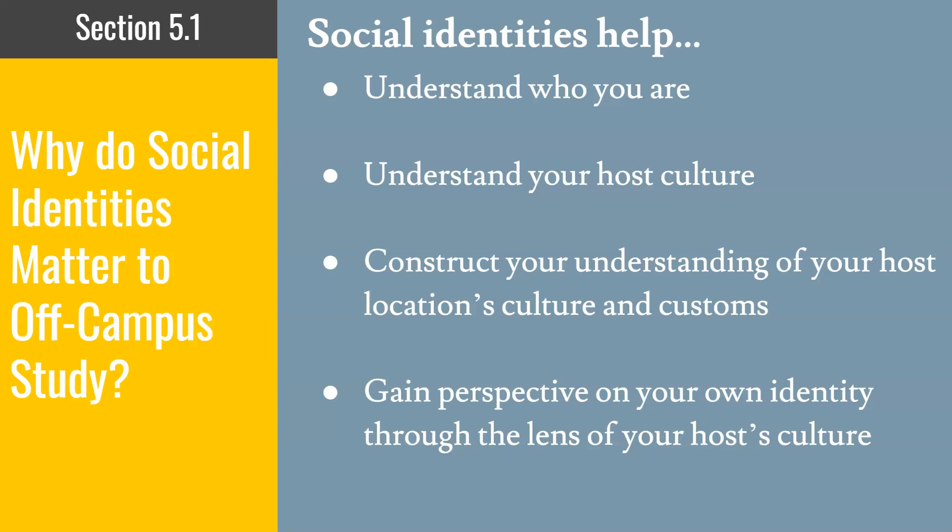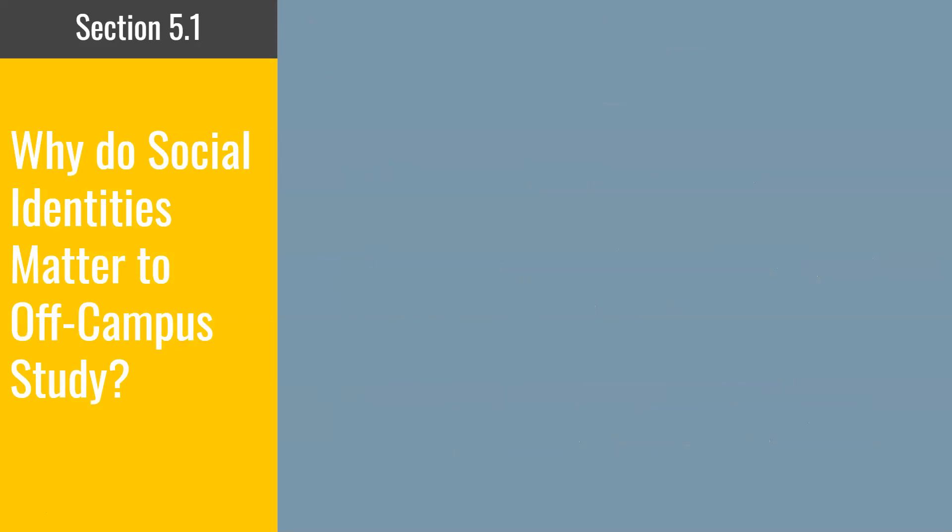When you go off-campus, your identities begin to take shape in a more complex way based on your interactions with your host culture, because you will start to see how you may be similar or different to your host culture across your identities. Your social identities will help you understand what cultural customs may look like — for instance, if a religious identity in your host community looks different than what you grew up with. It also allows you to get perspective on your identity through your host culture, such as learning how your nationality as an American is perceived abroad.